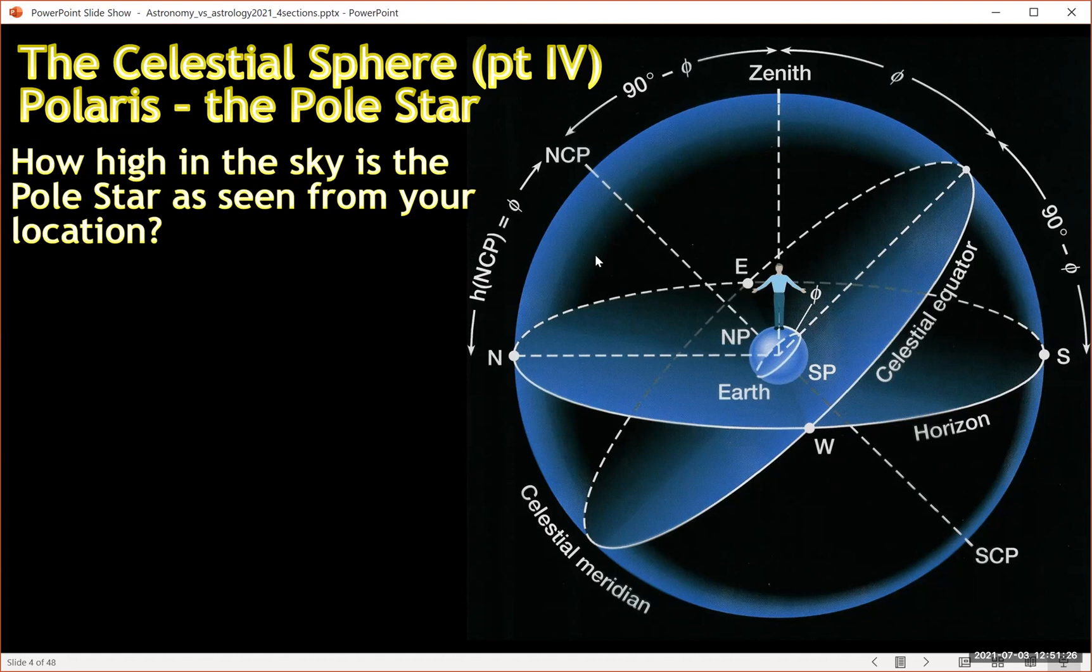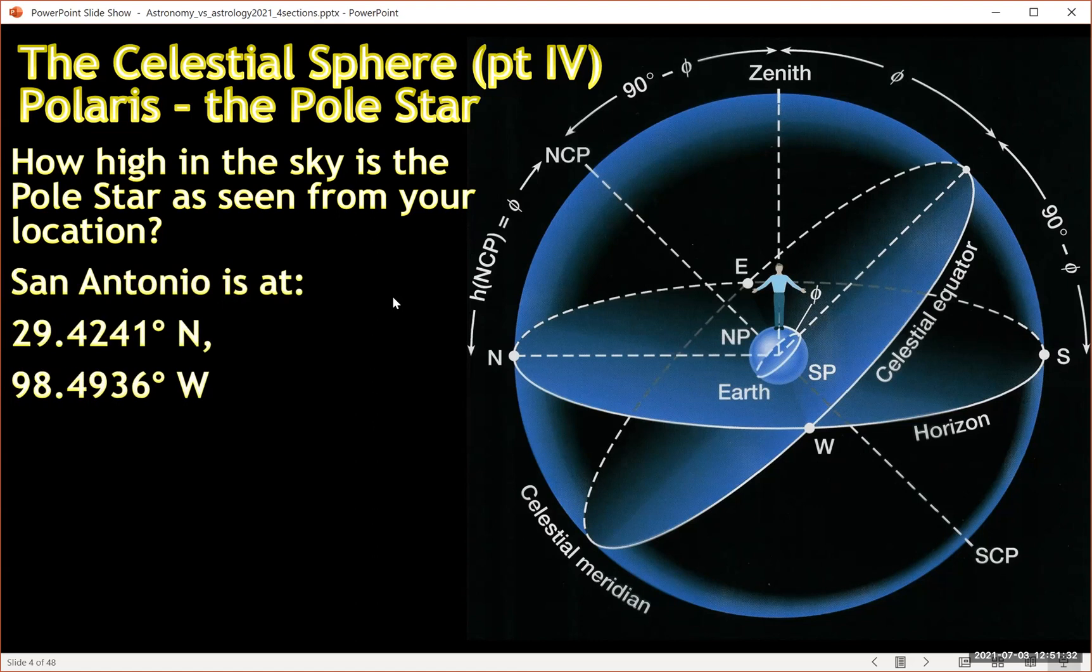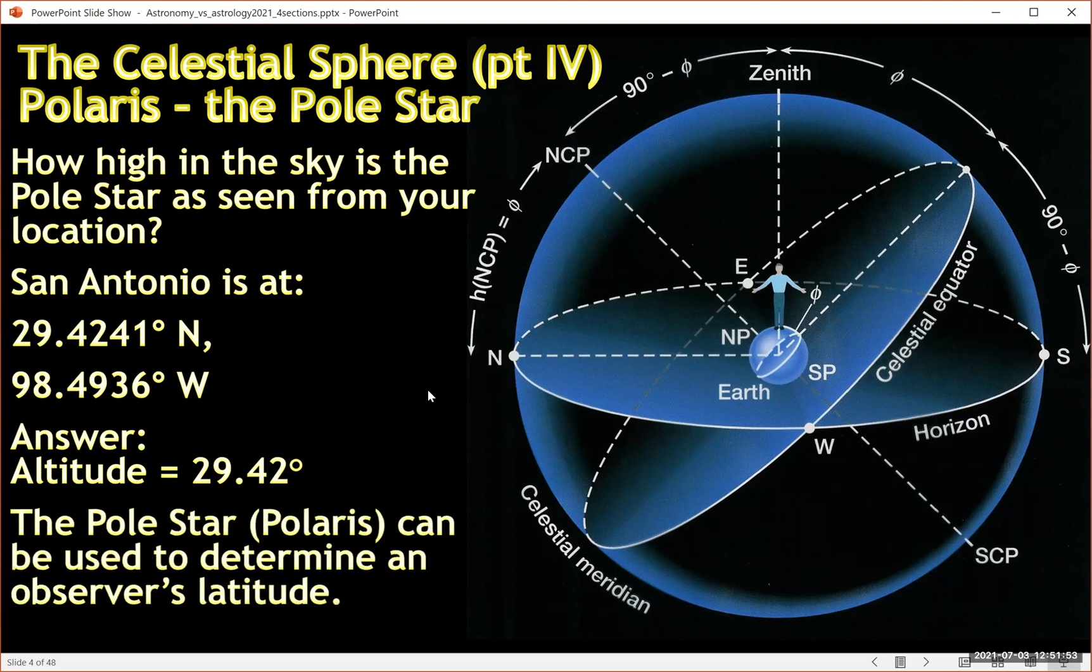So how high in the sky is it going to be? Well, it's basically the same as your latitude. So what is our latitude? I'm in San Antonio, so my latitude is a little over 29 degrees. And so that means in order to find the pole star, I need to look in the direction north and then from the horizon move my head up through an angle of 29.4 degrees. And then I will find the north star, pole star or Polaris.